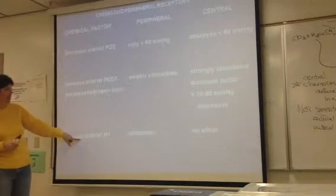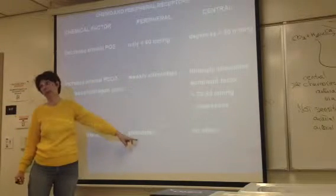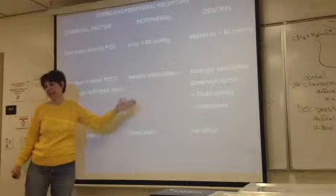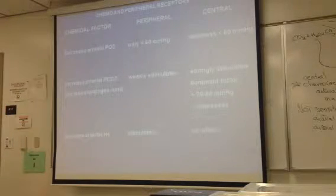And then finally, if there's an increase in arterial hydrogen ion, that stimulates only the peripheral chemoreceptors. Because it can't cross the blood-brain barrier in the central chemoreceptors.